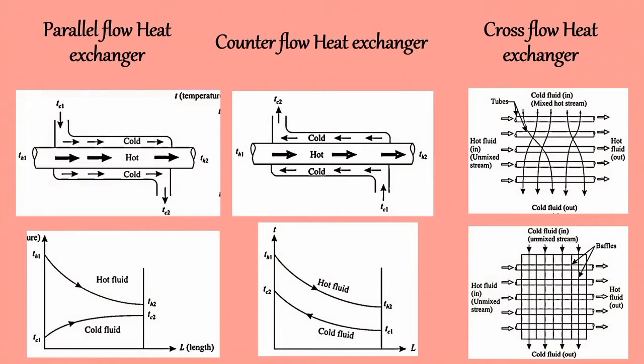In cross flow heat exchangers, one fluid moves through the exchanger at right angles to the flow path of the other fluid. The figure shows the flow arrangement and temperature distribution for parallel flow, counter flow, and cross flow heat exchangers. From the temperature distribution diagram of a parallel flow heat exchanger, we can say that the temperature difference between hot and cold fluids goes on decreasing from inlet to outlet.